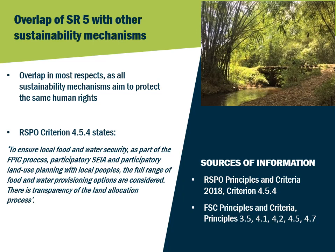Members of the HCSA operating in the palm oil and pulp and paper sector may well be members of these other sustainability mechanisms. All of these mechanisms aim to protect the same underlying human rights. The methods used to achieve the fulfilment of these rights in practice are also similar, involving the conduct of participatory social impact assessments such as the SEIA, followed by the development of operational plans including management and monitoring mechanisms. Criterion 4.5.4 of the RSPO principles and criteria, for example, states to ensure local food and water security as part of the equity process, participatory SEIA and participatory land use planning with local communities.